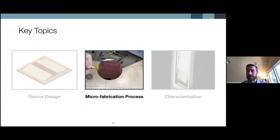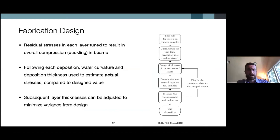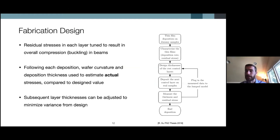Now I want to talk about how we physically fabricate these devices, which we did here at MIT in the MTL laboratories. The fabrication utilizes residual stresses in deposited materials — residual stresses are often a challenge to overcome in micro-fabrication, but we actually use this property to our advantage. By very carefully tuning the compressive and tensile stresses in each deposited layer, we can achieve an overall compressive residual stress that results in buckling of the beams that make up the device.